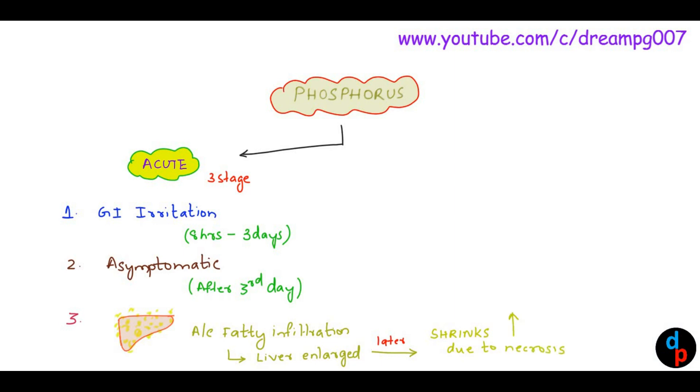This condition is called acute yellow atrophy of the liver. It is seen in acute phosphorus poisoning.